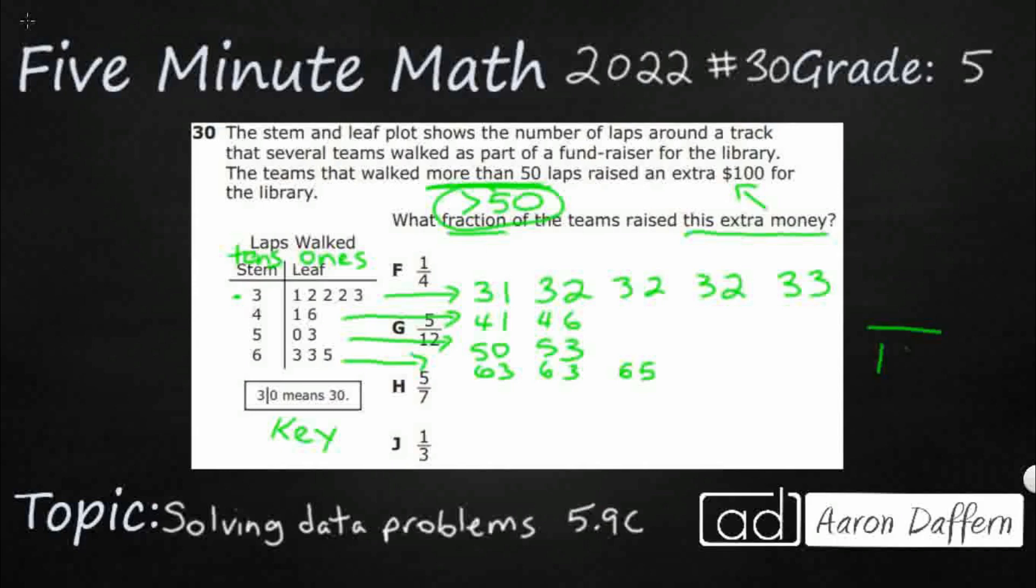Because if I need a fraction, that means I'm going to need a numerator and a denominator. And my denominator is going to be my total. My numerator is going to be how many are greater than 50. Right? So greater than 50.